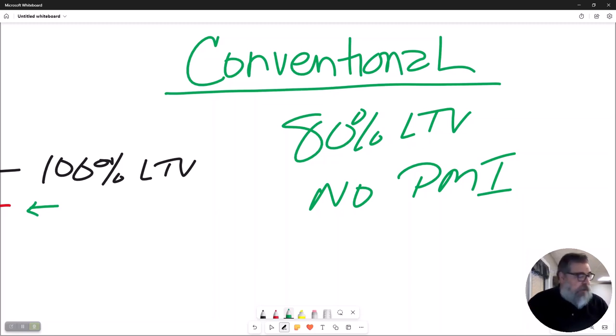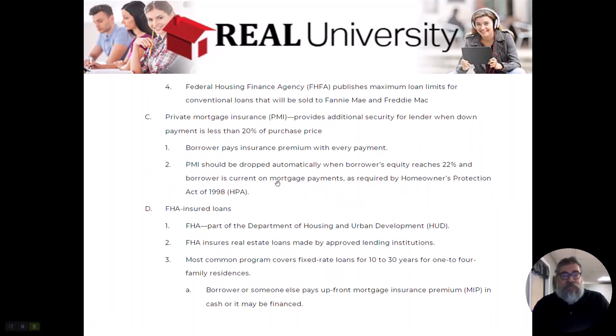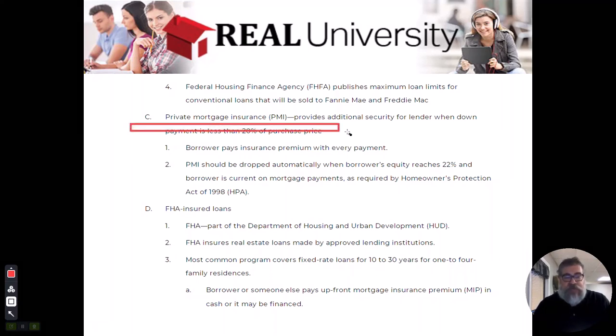Now I am here to tell you there are all kinds of games now being played with this word. But for this test, I want you to understand that's what conventional means: 80% loan to value, no PMI. So on these conventional loans, this is what we are talking about. They are the lowest loan to value, i.e. the 80%. And PMI protects that lender if that person has less than 20% down, meaning their loan is higher. That's the inverse of saying what I just said. If they have 10% down, that means they borrowed 90%. That's what we are talking about.